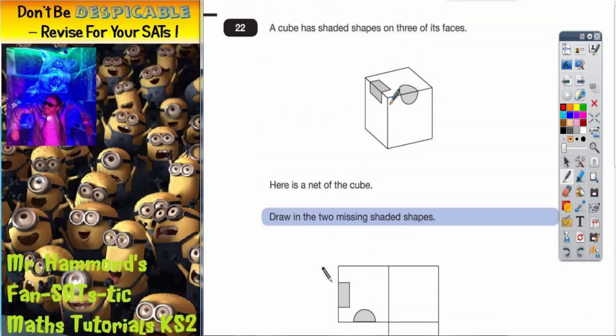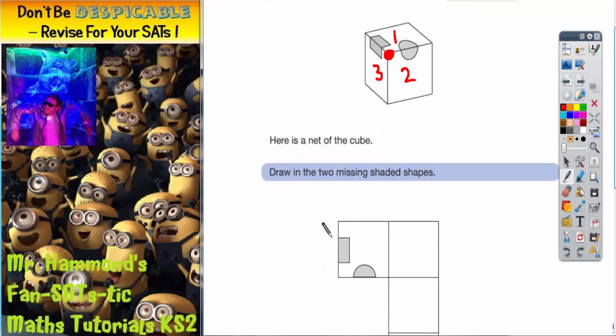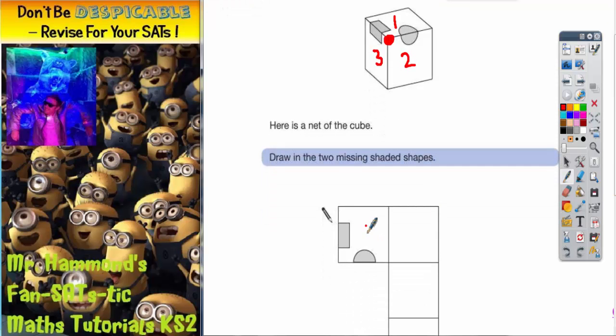On our cube here, we've got our square overlapping our circle and we've got one, two, three sides here all touching to this corner. So if we take a look at this on the net, we've got our first side here.